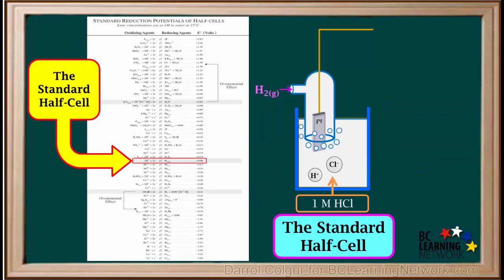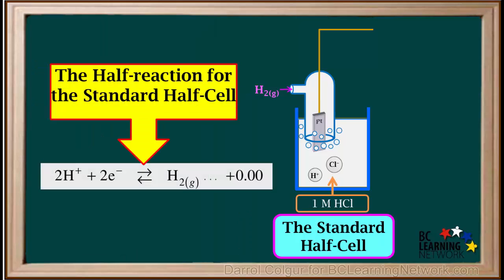The half reaction for the standard half cell is the shaded half reaction right in the middle of the reduction table. Here it is, enlarged.